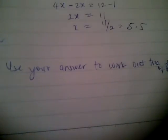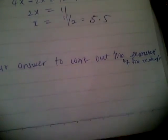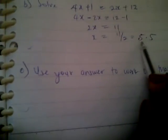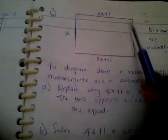Question number 6 says use your answer to work out the perimeter of the rectangle. Now, we'll find out that x is 5.5 and that's here and here.